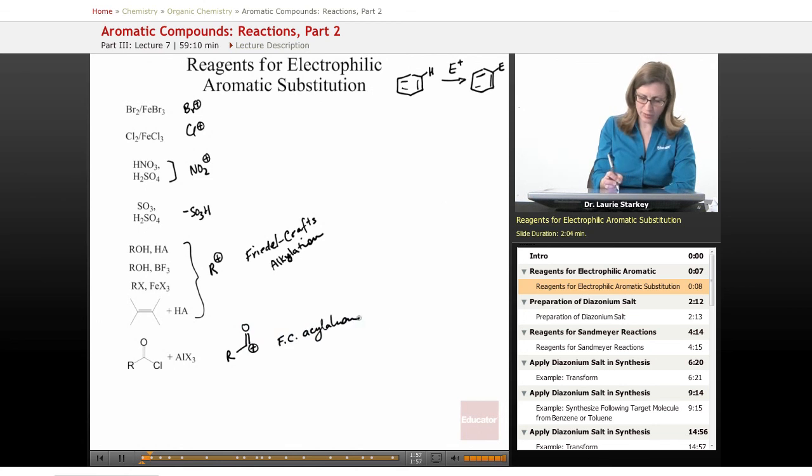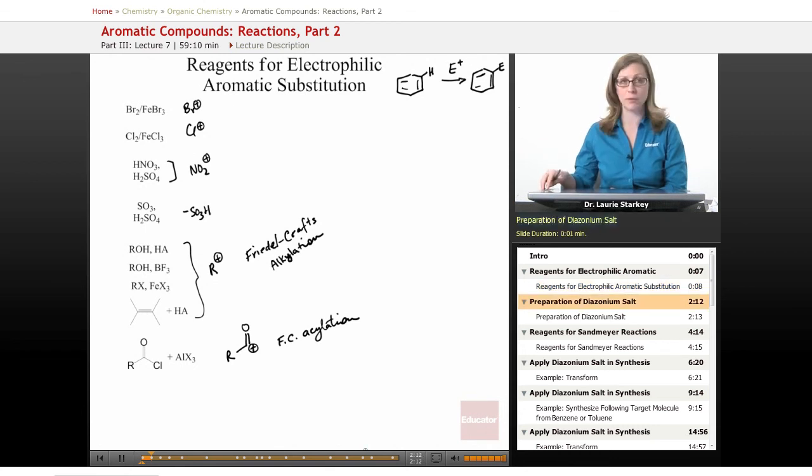So we can add an acyl group or an alkyl group or a variety of these other substitutions. So we can use combinations of these electrophilic aromatic substitution reactions to make all sorts of interesting benzene rings and di-substituted benzene rings and so on. But there are a few other reactions we can do.